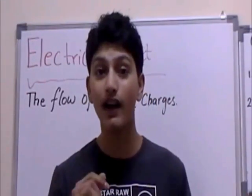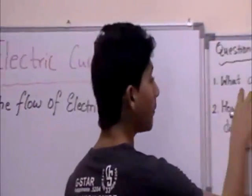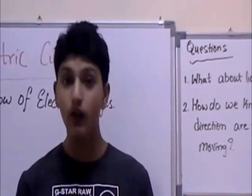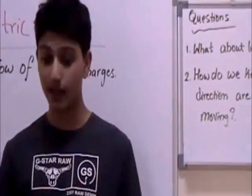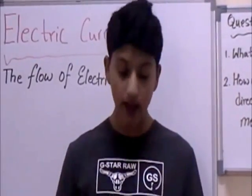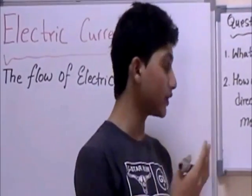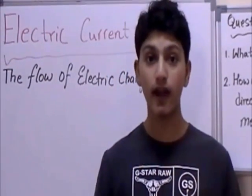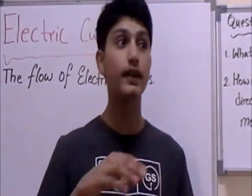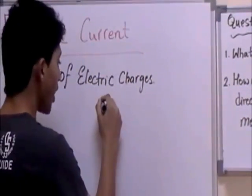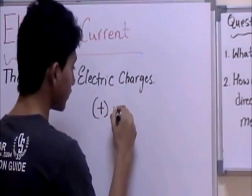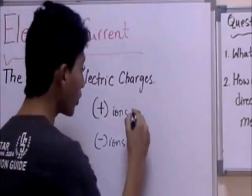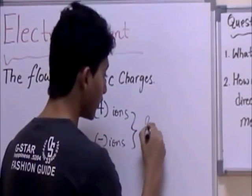That only applies to solid conductors. Now, what about liquid solutions? How are the charges going to flow in a liquid solution? Well, the answer is that if you have both positive and negative ions, in a liquid solution positive charges will carry as well as negative ions will carry. So when you have positive ions and negative ions in liquid solution, both will flow.